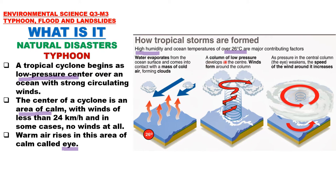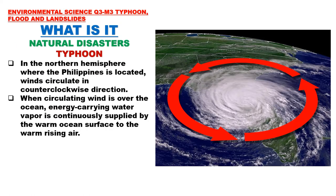A column of low pressure develops at the center, and winds form around the column. As the pressure in the central column — the eye — weakens, the speed of the wind around it increases. In other words, as the pressure in the center decreases, the wind speed around it increases.